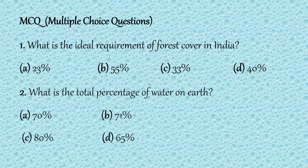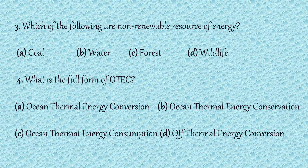Let us do some multiple choice questions from this unit. What is the ideal requirement of forest cover in India? Options: 23%, 55%, 33%, 40%. The correct answer is 33% — forest cover is required according to the size of the population of India. What is the total percentage of water on the earth? Options: 70%, 71%, 80%, 65%. The correct option is 71% — water is present on the surface of the earth. Which of the following is a non-renewable resource of energy: coal, water, forest, or wildlife? Coal is the non-renewable resource of energy.